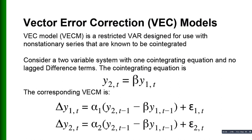The Vector Error Correction Model, also known as VECM, is a restricted VAR designed for use with non-stationary series that are known to be cointegrated. Sometimes two series may not be stationary, but there may be some linear combination of the two which is stationary. If that linear combination of the two non-stationary series is stationary, then we say the two series are cointegrated. Think of a two-variable system with one cointegrating equation and no lag difference terms; the cointegration equation may be: y2t = β·y1t.